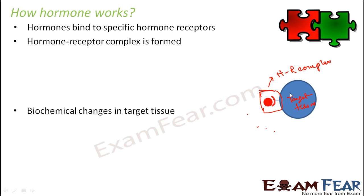Let us take an example. Suppose we are talking about the growth hormone. The growth hormone will bind to its receptors which are present outside the cells. Once it forms the growth hormone-receptor complex, a lot of chemical changes will start taking place inside the cells which will result in a physiological change — and that physiological change is growth. So growth happens due to the chemical changes introduced by the formation of the hormone-receptor complex.